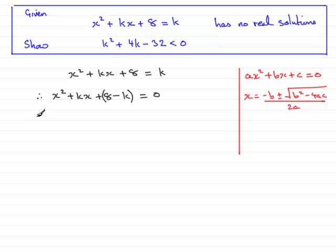So we could say that since there are no real solutions, then the b squared minus 4ac, b squared minus 4ac must be a negative number, must be less than zero. And this is what we need to start to show this result here.